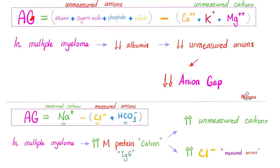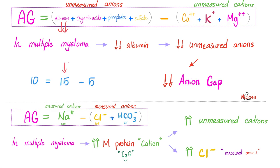Remember the anion gap: unmeasured anions minus unmeasured cations, or measured cations minus measured anions. In multiple myeloma, albumin is suffering because globulin production has crowded out albumin production. Albumin goes down, so the unmeasured anions decrease. When unmeasured anions decrease and the unmeasured cations stay normal, the anion gap shrinks. For example, if the anion gap was 15 minus 5 equals 10 before myeloma, after myeloma albumin drops and now it becomes 10 minus 5 equals 5 — the anion gap went down.